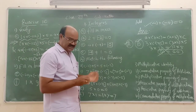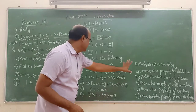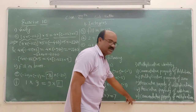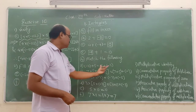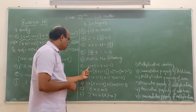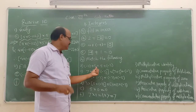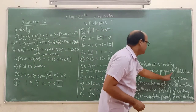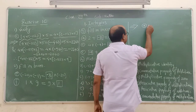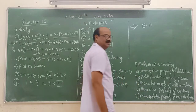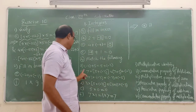Now students, the next question is match the following. After observing these, we come to know that the property names are on one side and related examples are on the other side. The first example has two quantities and an addition sign — minus 3 plus 4. We can see very easily that it is the commutative property under addition. Let us check: commutative property of addition is the second option. So A's answer is second.